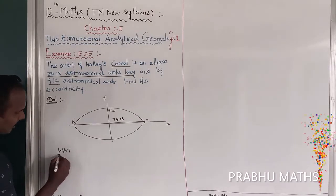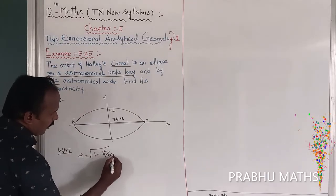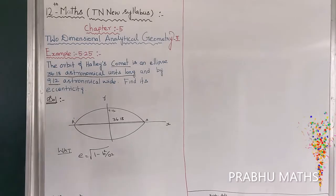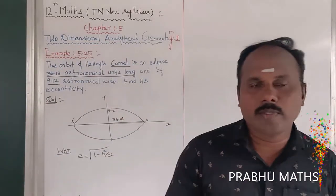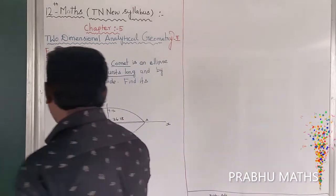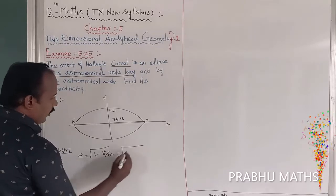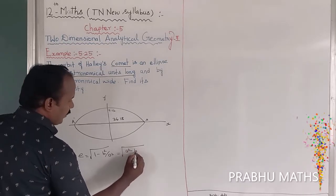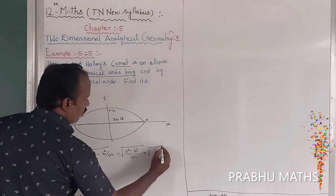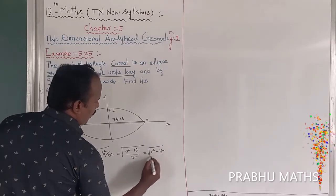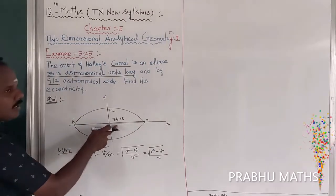We know that the eccentricity formula is e = √(1 - b²/a²). This can be rewritten as e = √((a² - b²)/a²), which simplifies to e = √(a² - b²) / a. This is the formula we will use.